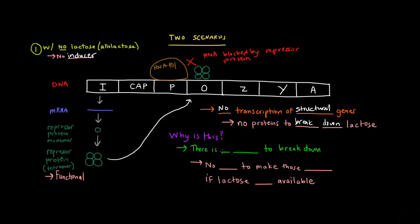Why is this? Well, there's no lactose to break down. It makes sense, right? There's no need to make proteins that break down and use lactose for energy if lactose is not available. So in the case of no lactose, the prokaryote doesn't need to transcribe these genes or make these proteins to break down lactose if there's no lactose around.